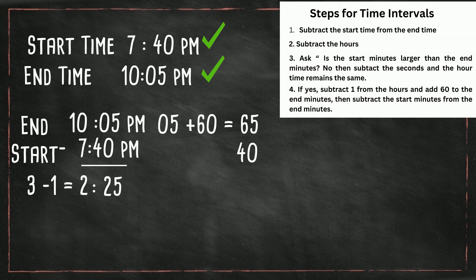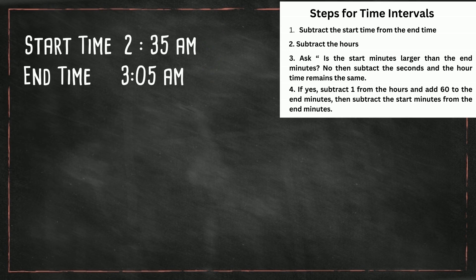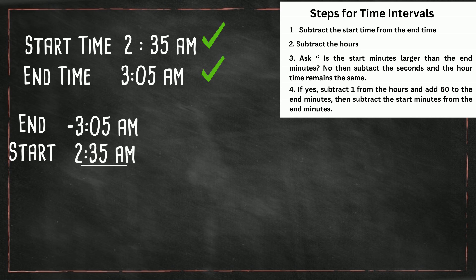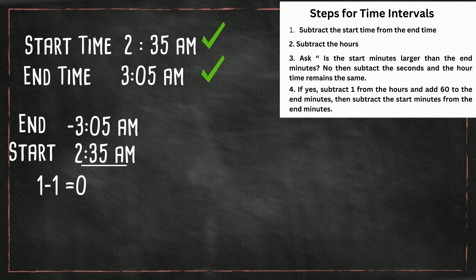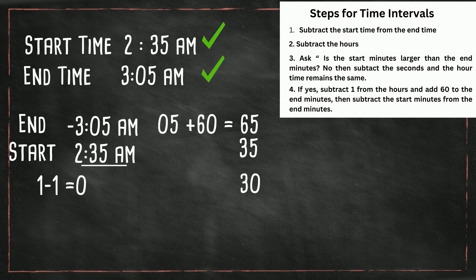Let's work another example. We have a start time of 2:35 a.m. and an end time of 3:05 a.m. Subtract start from end. Subtract the hours — 3 minus 2 is 1. Is the start minutes larger than the end minutes? Yes. First, subtract 1 from the hours. Then add 60 to the end minutes — 60 plus 5 is 65. Then subtract the start minutes — that gives you 30. So the time interval between 2:35 and 3:05 is 30 minutes.